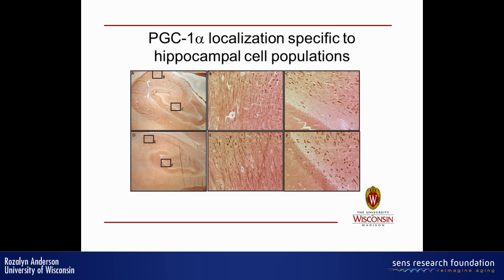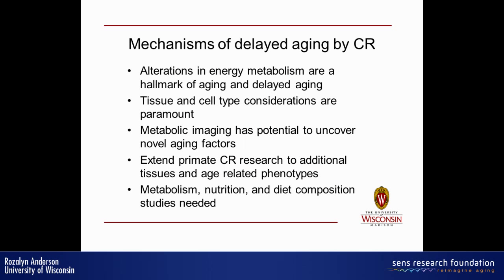This is the hippocampus in our monkey brains — control versus CR. You can see a stain of PGC-1-alpha, a key metabolic regulator of mitochondrial energy metabolism in particular, in the cell bodies, excluded from the nuclei. I want to convey that alterations in energy metabolism are a hallmark of aging as delayed by CR, and possibly delayed by genetic manipulations also. Tissue and cell type considerations are paramount. Metabolic imaging has the potential to uncover novel aging factors and novel associations — like the lipid deposition and droplet size that reflects differences in mitochondrial activity.